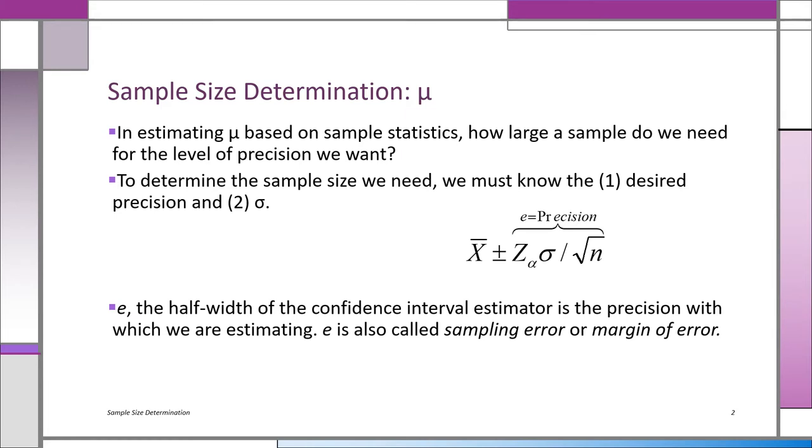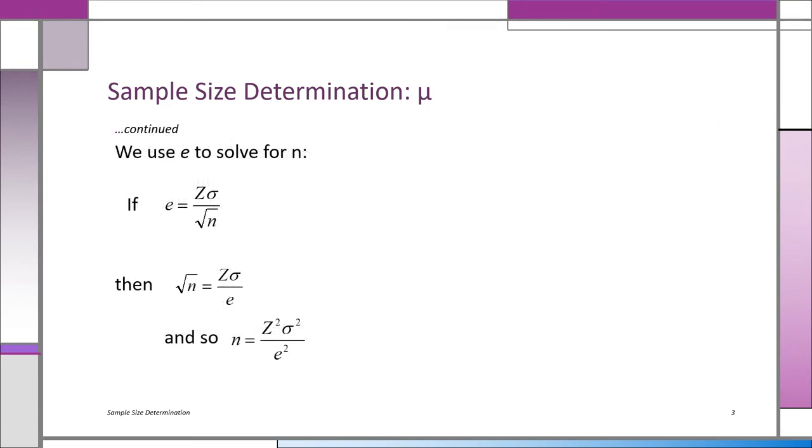So here it is. We use e in order to solve for n. e is precision or margin of error, and it's equal to z times sigma divided by the square root of n. And when we turn everything around, we have the square root of n all by itself on the left side of the equation as equal to z times sigma divided by e. To solve for n, we need to square everything on both sides. So n turns out being equal to z squared times sigma squared divided by e squared. And now we can solve for n.